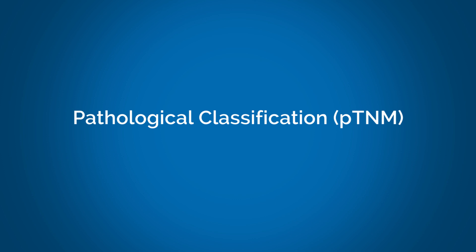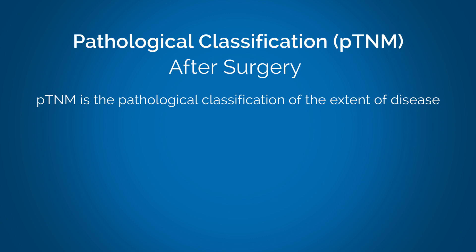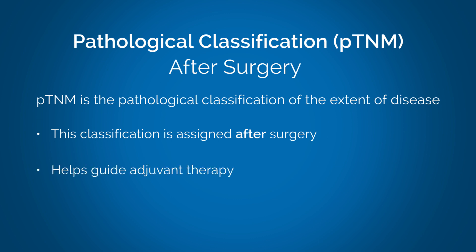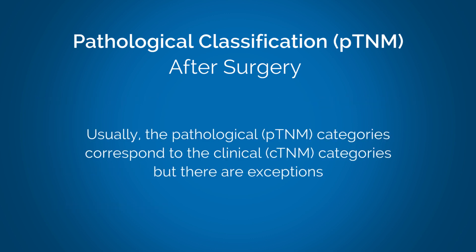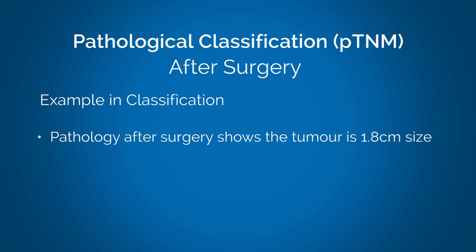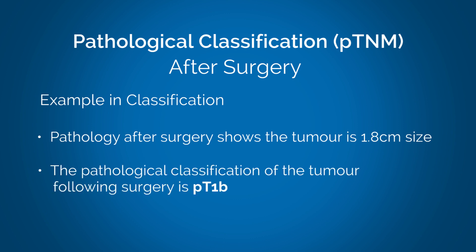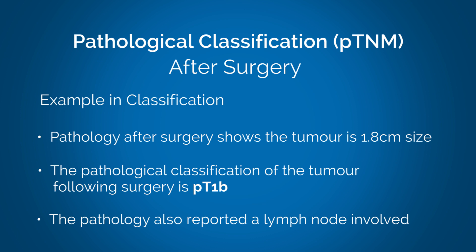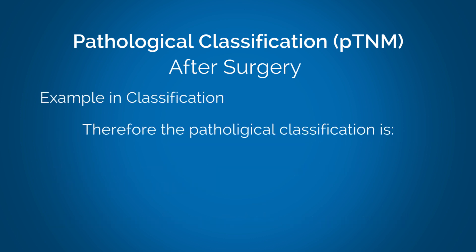Pathological classification — after surgery. pTNM is the pathological classification of the extent of disease. This classification is assigned after surgery; it helps guide adjuvant therapy and estimate prognosis. Usually the pathological pTNM categories correspond to the clinical cTNM categories, but there are exceptions. For example, the patient has surgery to treat their cancer. The pathology after surgery shows the tumor is 1.8 centimeters in size, giving a pathological classification of pT1b. The pathology also reported a lymph node in the hilum was involved; therefore, the pathological classification is pT1b, N1, M0.